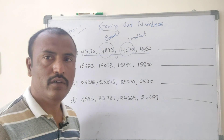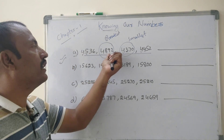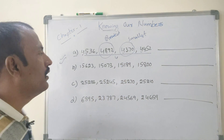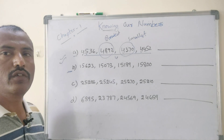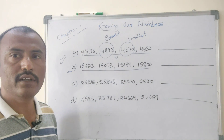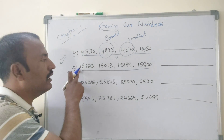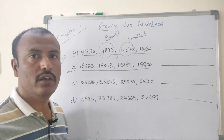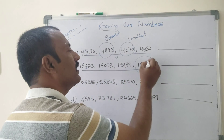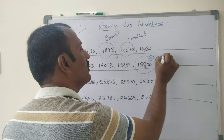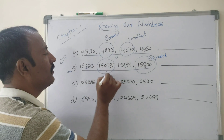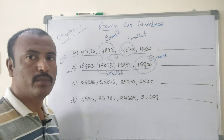This is the smallest number. In this series, 4892 is the greatest number and 4370 is the smallest number. Next, series B — all are 5-digit numbers. You can compare with the 10,000th place: all equal at 1. Next, go to the 100th place: 6, 0, 1, 8 — obviously 8 is the greatest. The one with 0 at that place is the smallest.